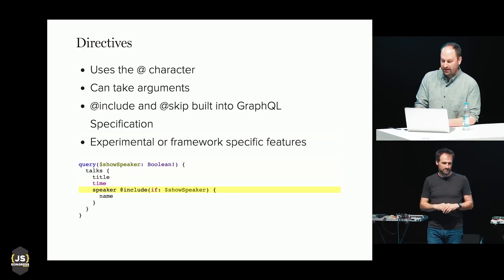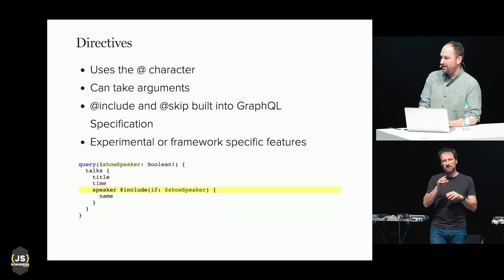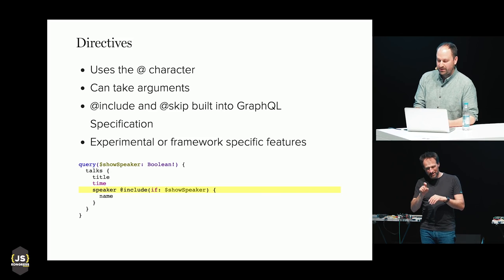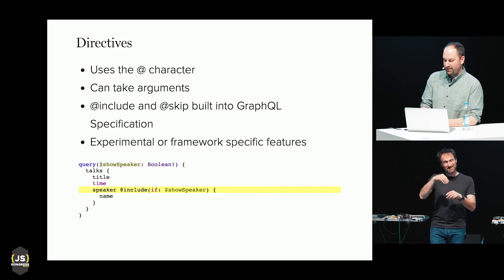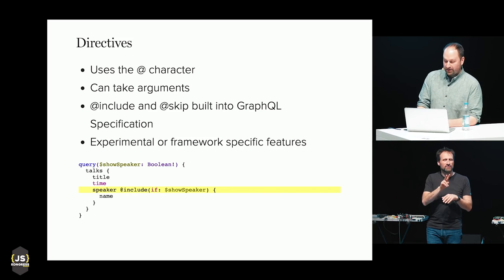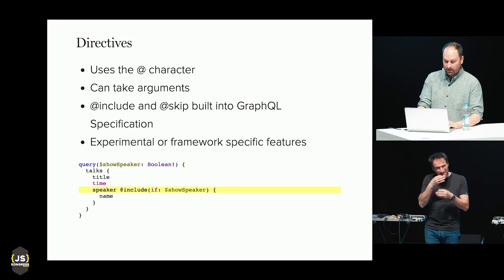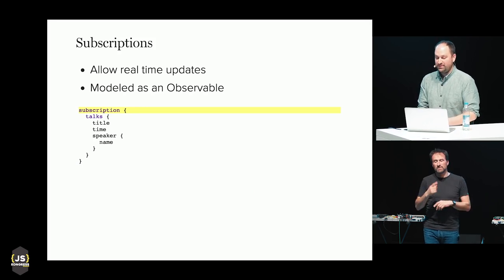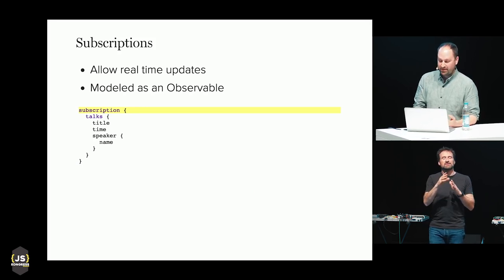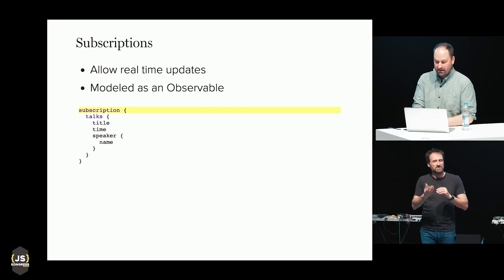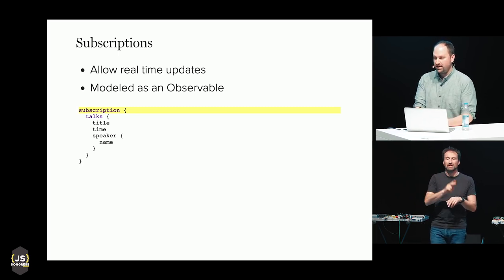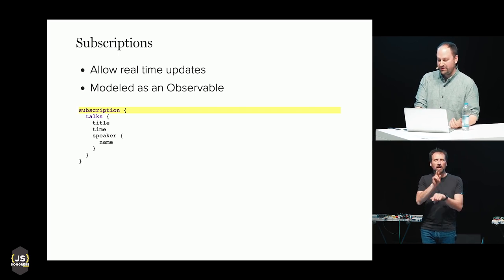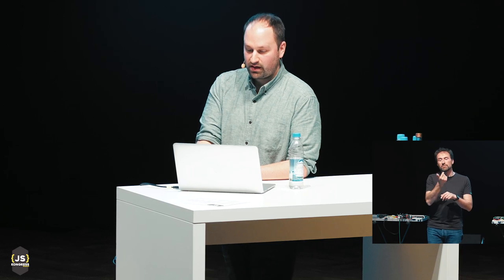Directives are tokens you can add to almost any part of a GraphQL query. The spec defines two of them — include and skip — which let you conditionally request fields based on a variable value. Directives are also used for experimental or framework-specific features. GraphQL also supports subscriptions, which are real-time updates. Instead of one query getting one response, it's more like an observable — from one query you receive multiple responses as the data changes. This is usually implemented with WebSockets.